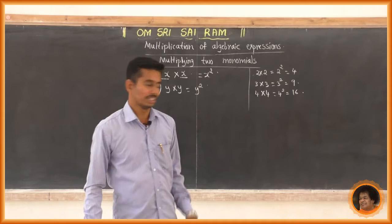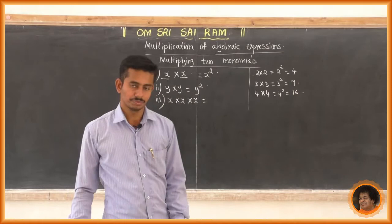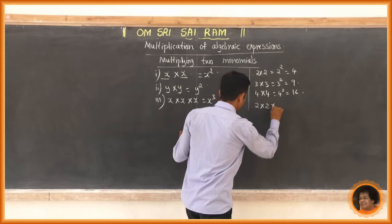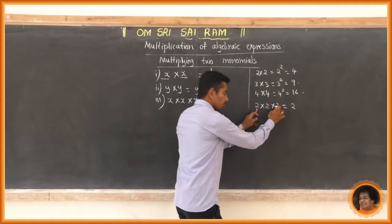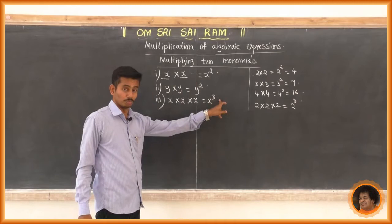If we multiply x into x into x, what is the product? x into x is x squared, and x squared into x is x cubed. Because 2 into 2 into 2 is 2 to the power 3. If 3 is multiplied thrice, it is 3 to the power 3. In the same way, x multiplied thrice becomes x cubed.